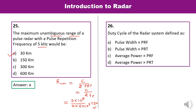Question 26: Duty cycle of a radar system is defined as? Recalling the formula, duty cycle can be represented as pulse width multiplied by PRF. Alternatively it can be written as pulse width divided by pulse repetition time. So A is the correct answer.